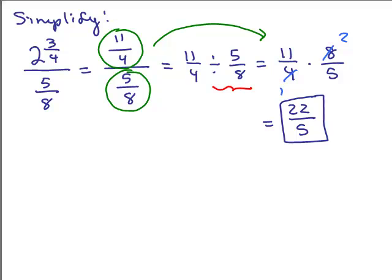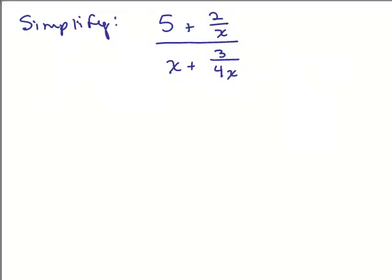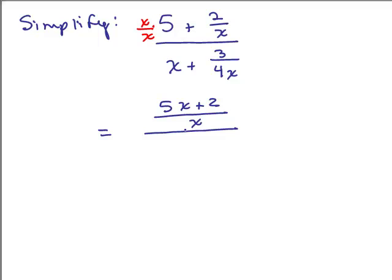Now let's do one with variables: (5 + 2/x) over (x + 3/4x) using Method 1. The first step is to simplify the numerator so it's a single fraction. Looking at the numerator, we need a common denominator of x. Multiply 5 by x/x so the numerator becomes (5x + 2) / x.